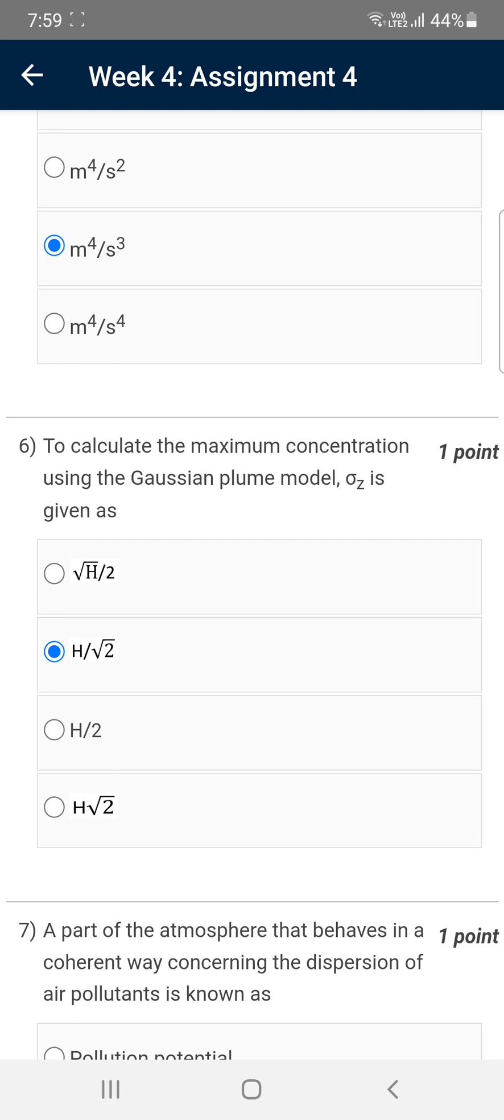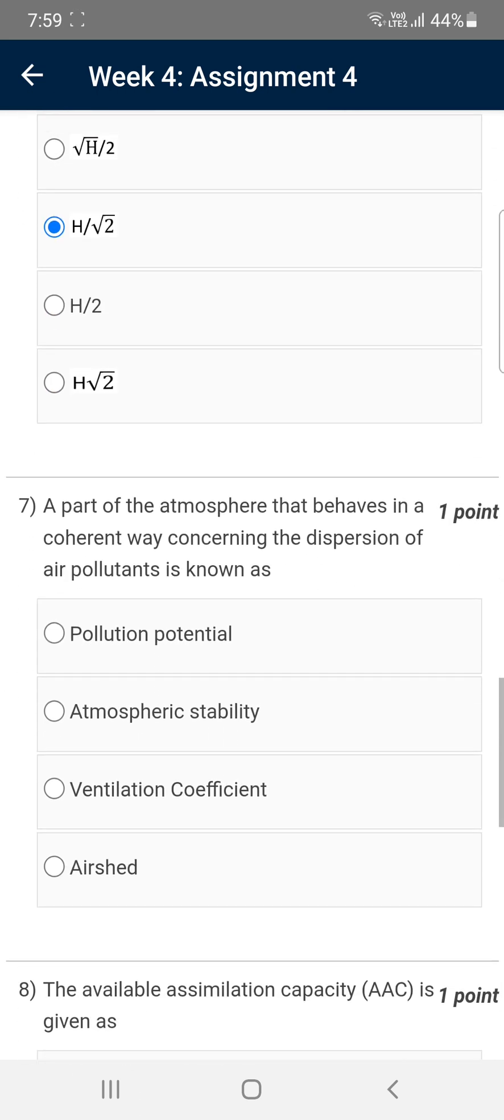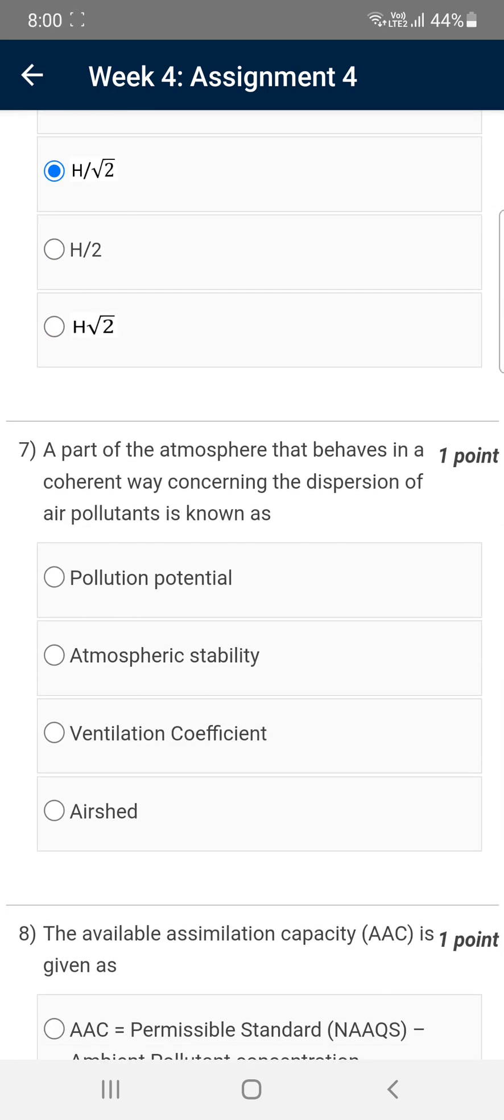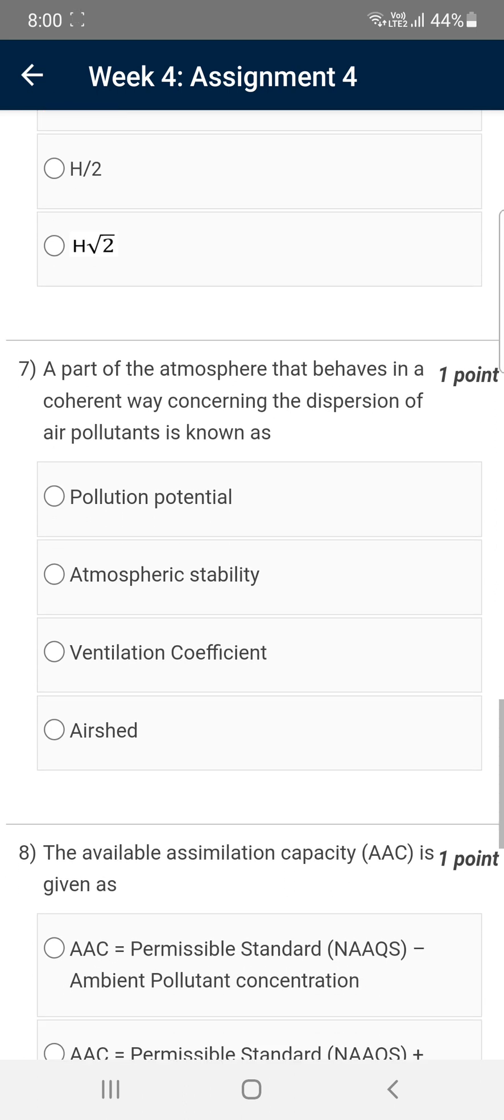Moving on to the seventh question: A part of the atmosphere that behaves in a coherent way concerning the dispersion of air pollutants is known as... The answer for the seventh question is option D, the fourth option, that is airshed. Airshed is the part of atmosphere that behaves in a coherent way.